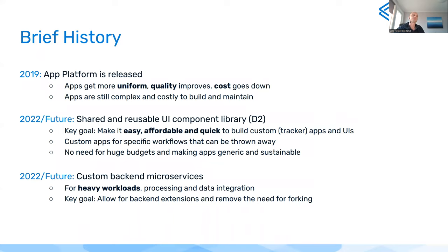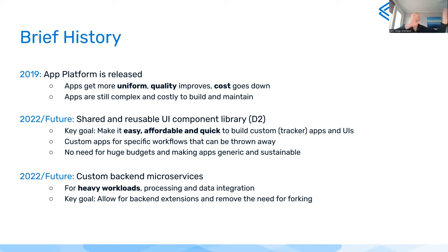Apps were still costly to build and maintain. So what we're thinking now in 2022 is to add more extension points to existing apps and build a shared, reusable UI component library. App developers can use the app platform plus this component library to build their own apps quickly from existing UI components and building blocks — like an org hierarchy selector — instead of starting from scratch. The goal is almost like a low-code approach: drag and drop the components you need, write some glue code, and have an app.